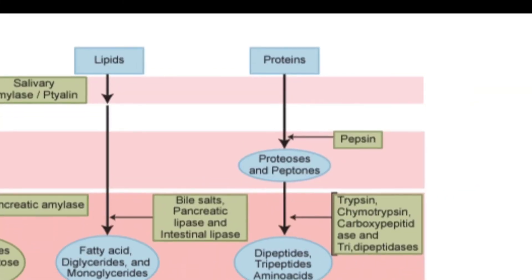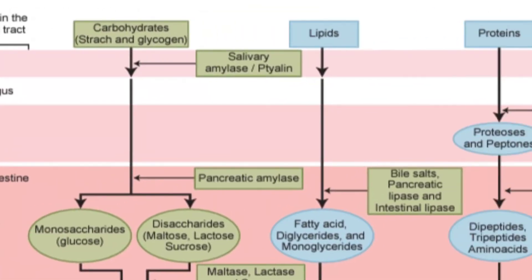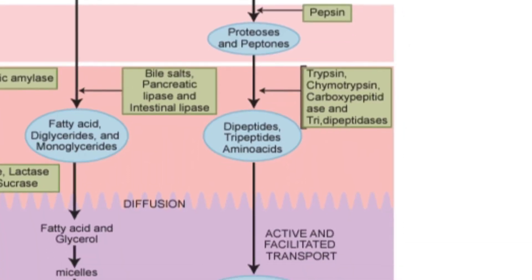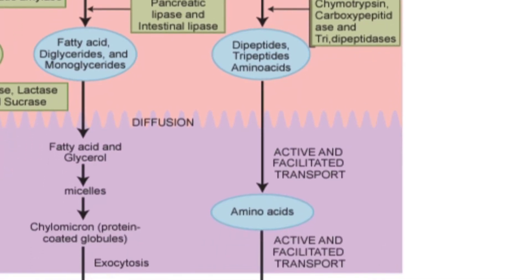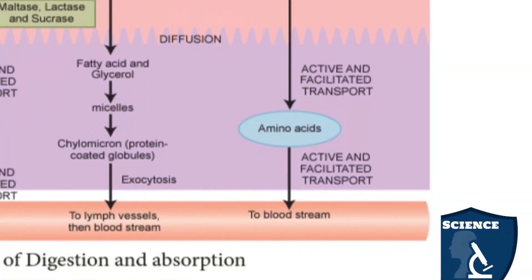For proteins: digestion begins in the stomach, where proteins are broken down into proteoses and peptones, then further into di- and tri-peptides, and finally into amino acids in the small intestine, which are absorbed by active transport.